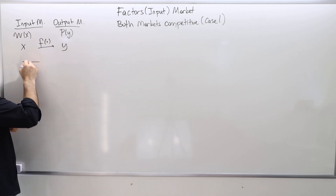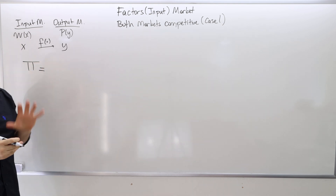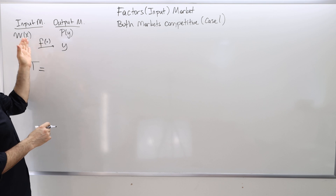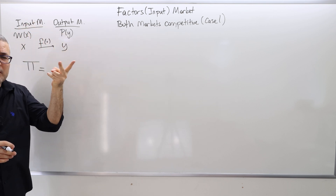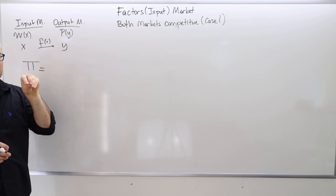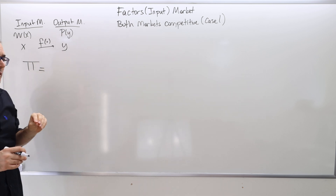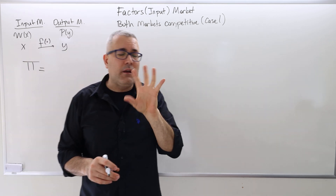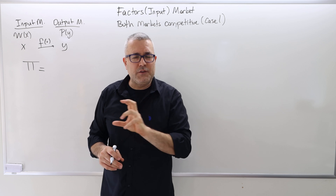So what is the profit in this scenario for this firm? There is a firm operating in both input and output markets at the same time, and the firm is price taker in both markets. Profit is, as always, revenue minus cost.